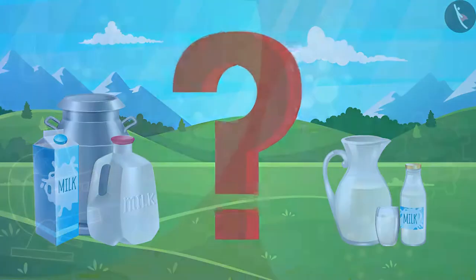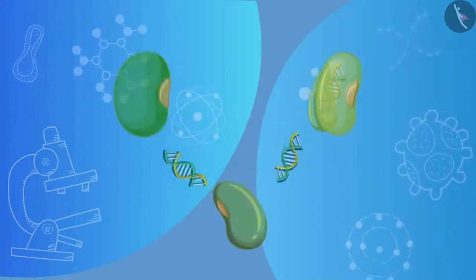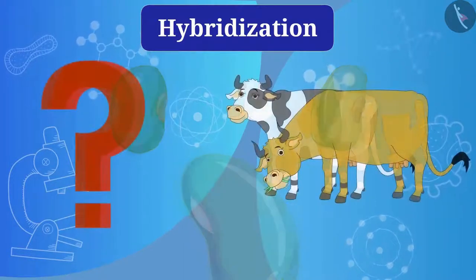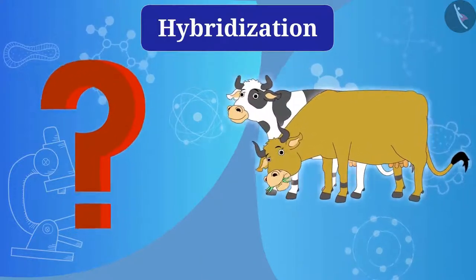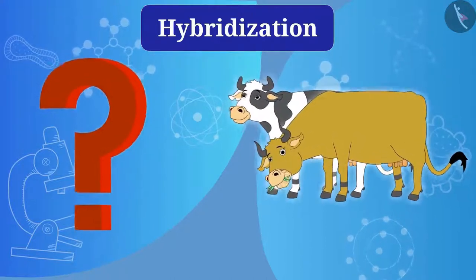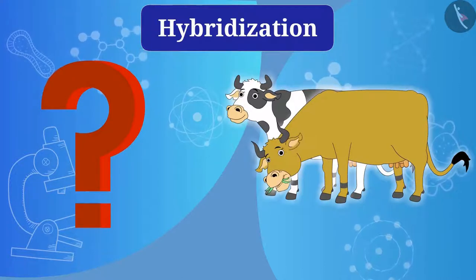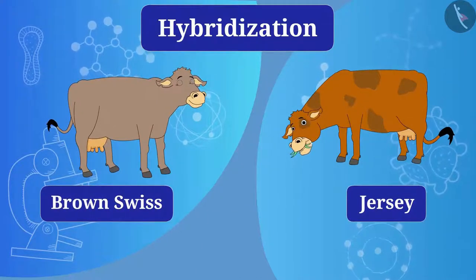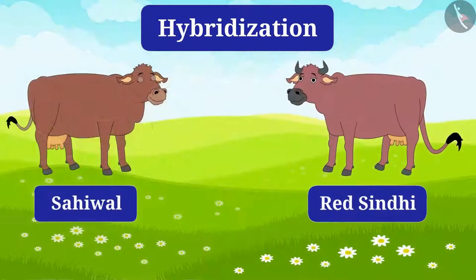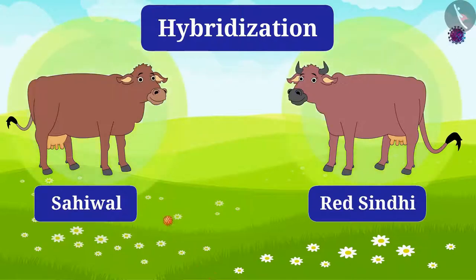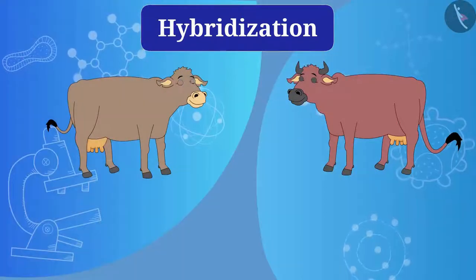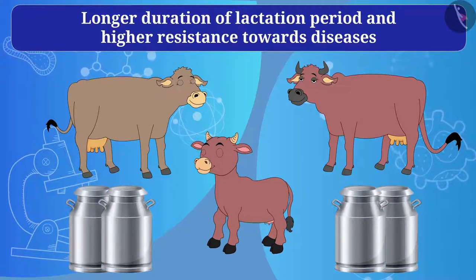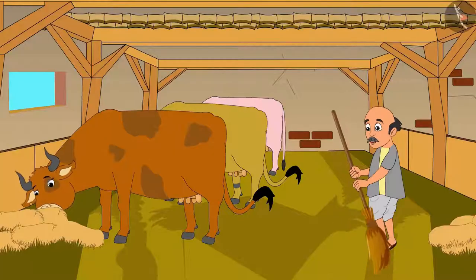The production of milk can be increased by increasing the duration of the lactation period. Just as hybridization can be done in crops to obtain desired properties, hybridization is also possible in animals. For example, Jersey and Brown Swiss are species with a high lactation period, and Red Sindhi and Sahiwal are species with high immunity. If the results of both breeds are seen in the calf, it will have both a longer lactation period and higher resistance to disease.